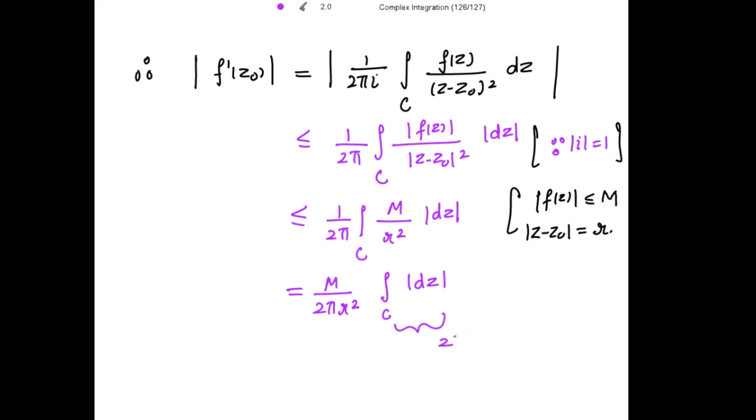Because this integral is over the circle and we have to integrate mod of dz, that is nothing but the circumference which is 2πr, because the circle is having the radius r. So this is further equal to M divided by 2πr², and this integral is 2πr. So this 2π, 2π cancelled out, and this also one r will go, and we get M divided by r.